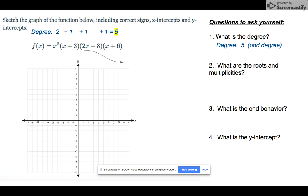Now the roots and multiplicities, I take those from these factors and I set each factor to 0 and solve for x. So x squared equals 0, so I know x equals 0 is one of my roots or one of my x-intercepts.